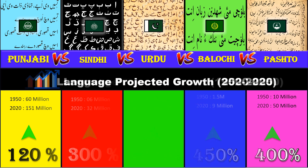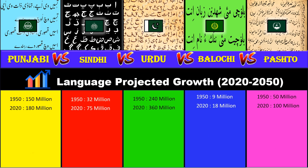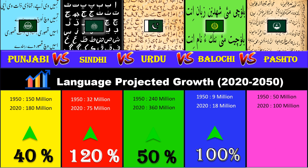Language projected growth from 2020 to 2050. Punjabi: 40 percent. Sindhi: 120 percent. Urdu: 50 percent. For both Balochi and Pashto: 100 percent.